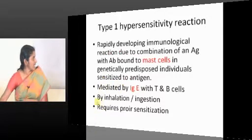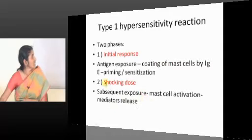Antigen exposure can happen by inhalation or injection. There are two phases: the initial phase involves antigen exposure where sensitization happens, and the shocking dose phase involves subsequent exposure leading to mast cell activation.